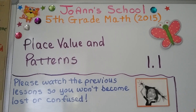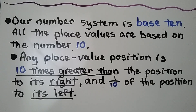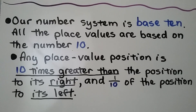Lesson 1.1: Place Value and Patterns. Our number system is base 10. All the place values are based on the number 10. Any place value position is 10 times greater than the position to its right, and one-tenth of the position to its left.